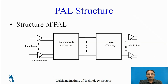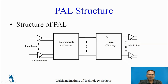Now let us learn the structure of PAL. Input lines are connected to the Programmable AND Array through a Buffer and Inverter stage. The outputs of the AND Arrays, which are the product terms, are connected to Fixed OR Arrays. The outputs of the OR Arrays are then made available through a final Buffer and Inverter stage. The key point: the AND Array is programmable, whereas the OR Array is fixed — you cannot modify its inputs.